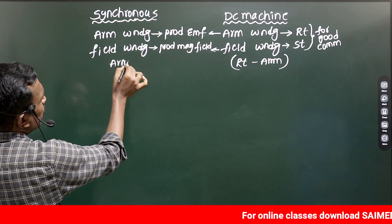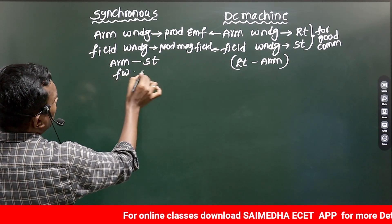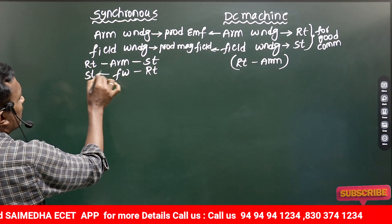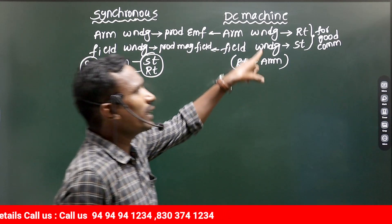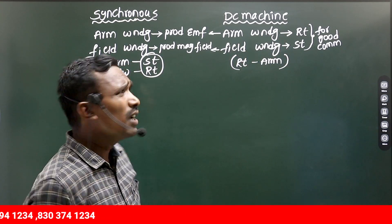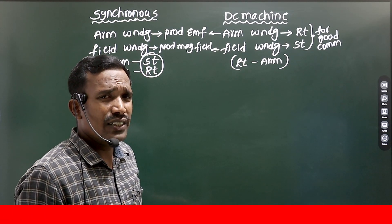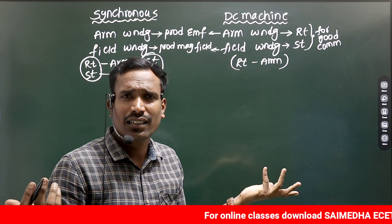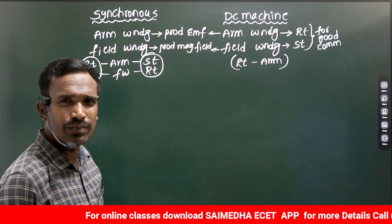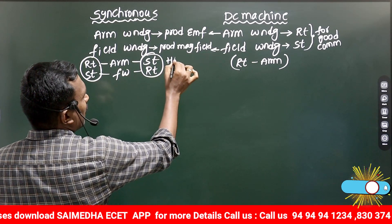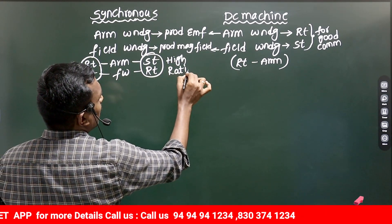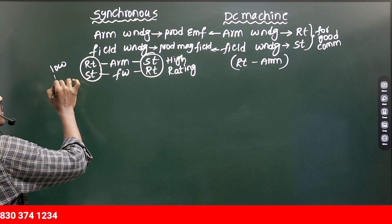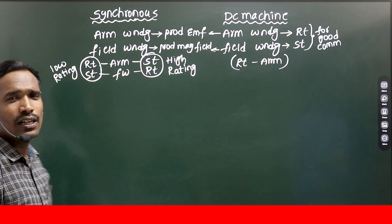Coming to synchronous machine, we can use armature winding at stator and field winding at rotor, or armature winding in the rotor and field winding in the stator — any combination is fine. In DC machine, commutation requires armature on the rotor. In synchronous machine, there is no commutation requirement, so we can place armature winding as needed. But practically, for high rating applications, stationary armature is better than rotating armature, while for low rating applications, rotating armature is generally used.